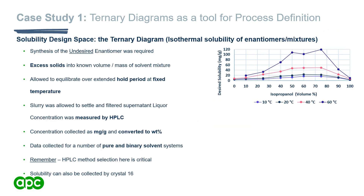To build the ternary phase diagram, we generally conduct solubility measurements. Two common methods at APC are isothermal solubility and clearing/cloud points through Crystal16. The isothermal method is generally paired with HPLC sampling. To carry out isothermal solubility, we need to synthesize the opposite enantiomer of the API we desire — in this case done by modifying the catalyst system used.